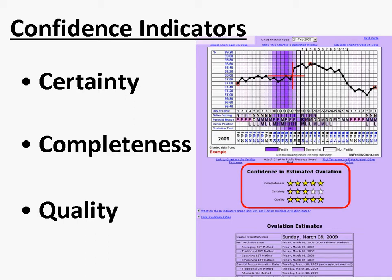MyFertilityCharts.com gives you three different confidence indicators: certainty, completeness, and quality. These appear beneath your fertility chart using a 5-star system, with 5 stars being the highest and the preferred outcome.